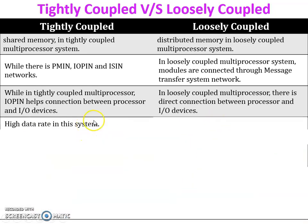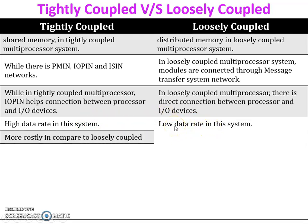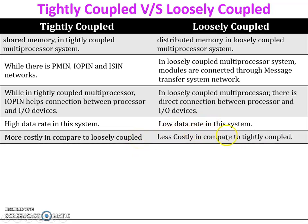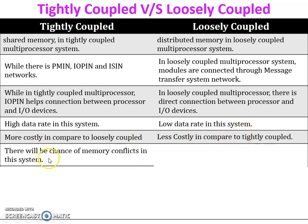Tightly coupled systems have a high data rate, while loosely coupled systems have a low data rate. Tightly coupled systems are more costly compared to loosely coupled systems. There is also a chance of memory conflicts in tightly coupled systems because there is only one main memory shared by all processors.